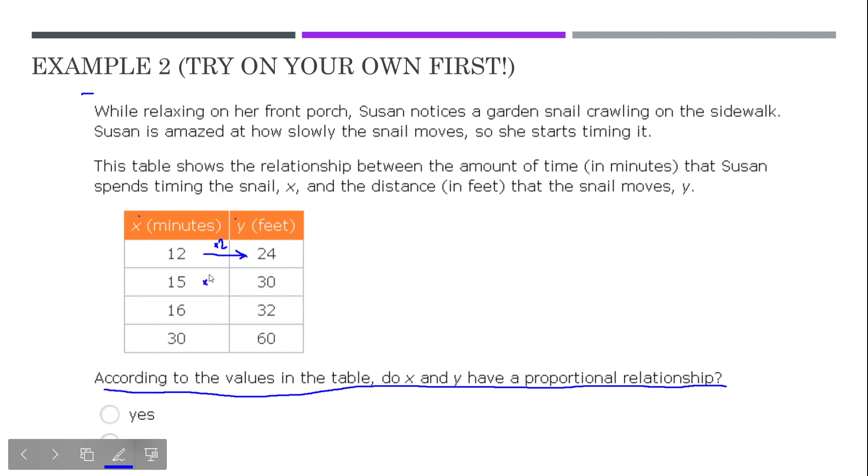If this table shows a proportional relationship between x and y, that's always going to be the case. And let's see if it is. 15 times 2, okay, that's 30. Good. 16 times 2, 32. Good. 30 times 2, 60. Okay. So, that means that the snail is always moving at the same rate. It's not going any faster. It's not going any slower. It's moving 24 feet every 12 minutes. Or, in other words, it's moving twice as many feet as there are minutes.